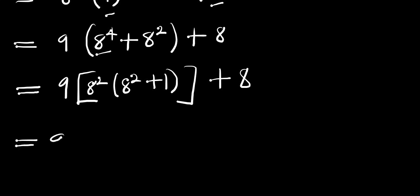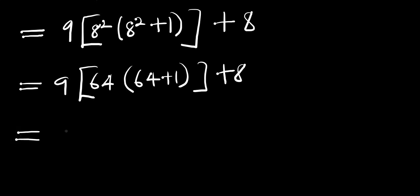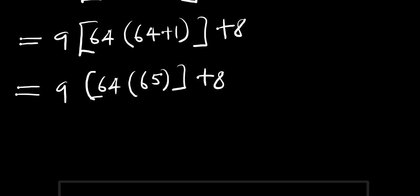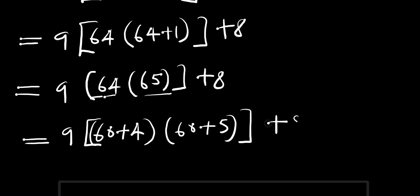So this will give us 9 times 64 times 64 plus 1, plus 8. That is 9 times 64 times 65, plus 8. We can rewrite this as 9 times, instead of 64 we have 60 plus 4, and instead of 65 we have 60 plus 5, plus 8.